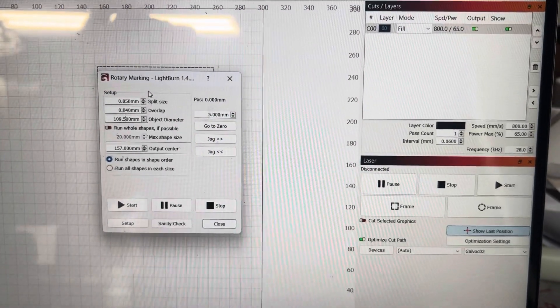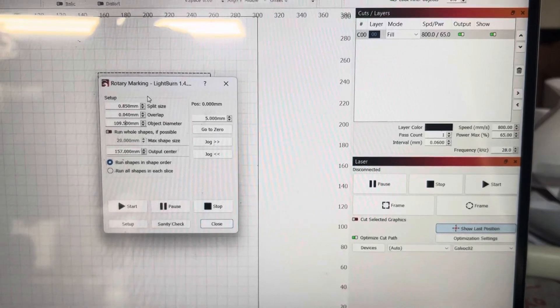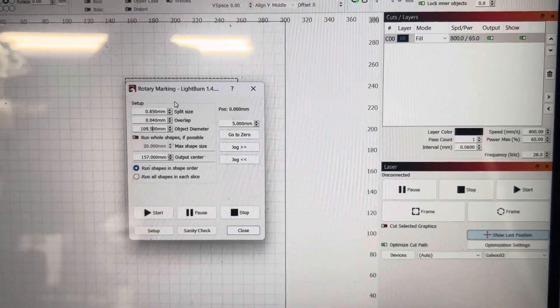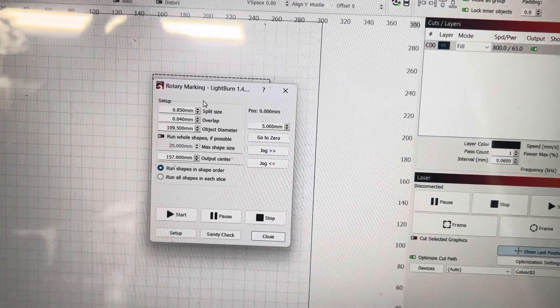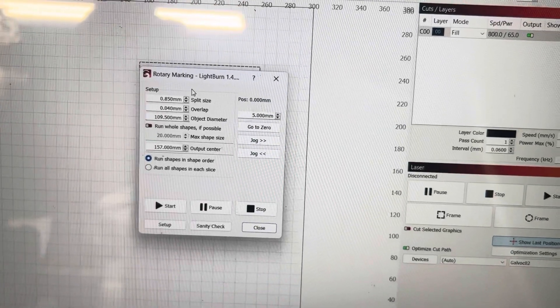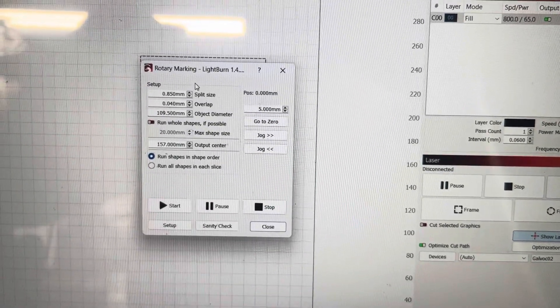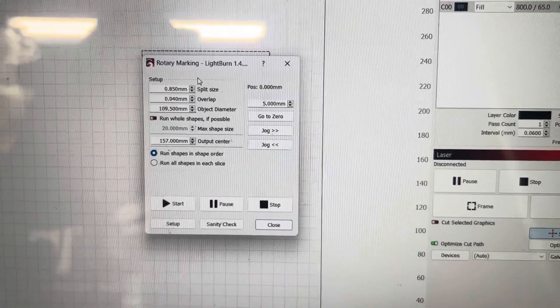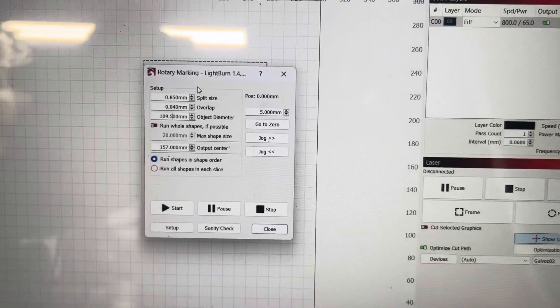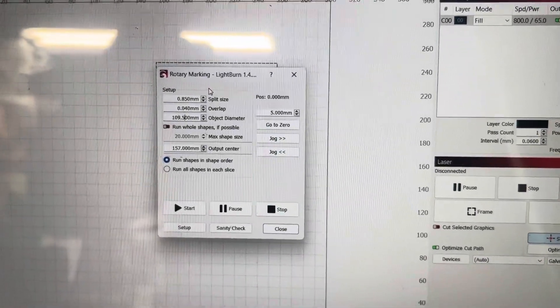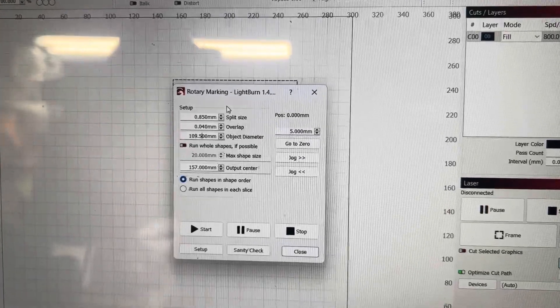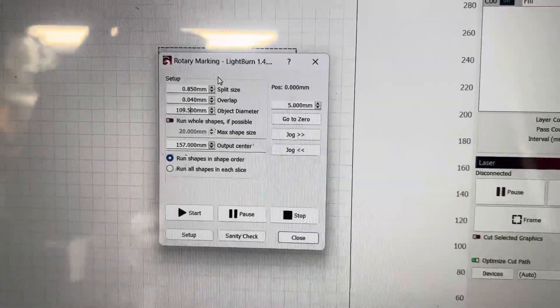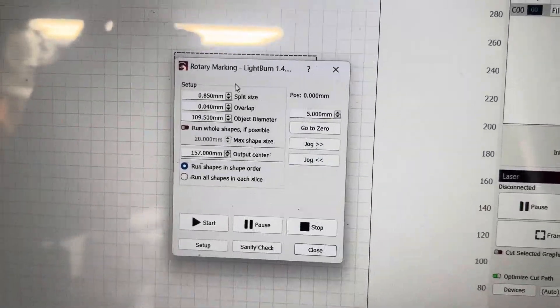This video is applicable for people running galvo style lasers, whether it be a fiber laser or a galvo CO2 laser. I've seen this asked a whole bunch. People are saying that their rotary takes them forever to do cups. Split size is crucial when it comes to that stuff. So let's get into it.